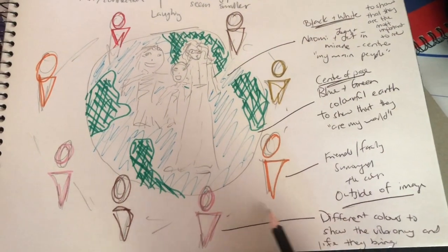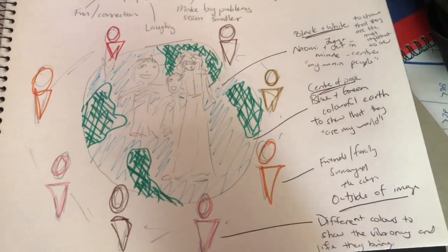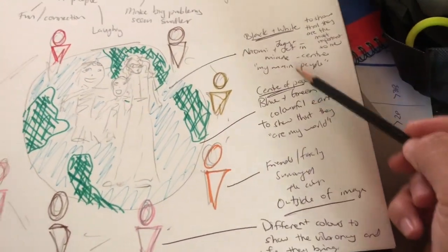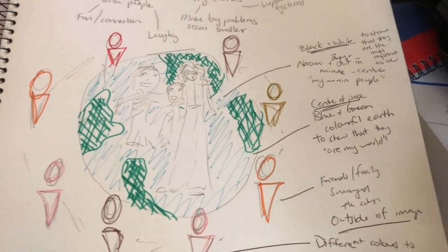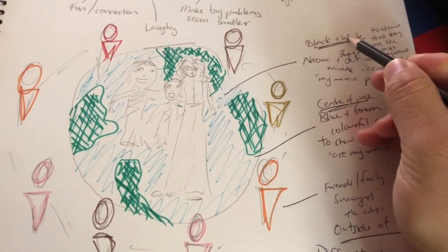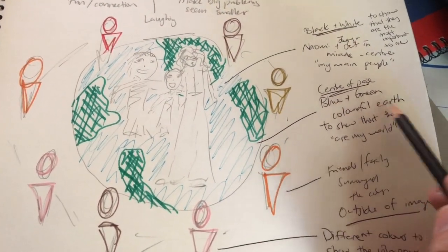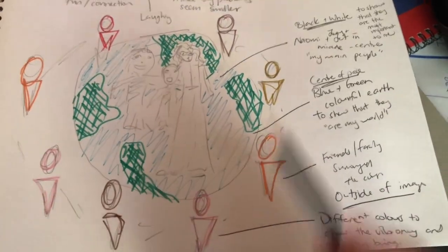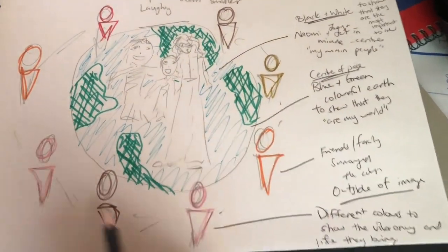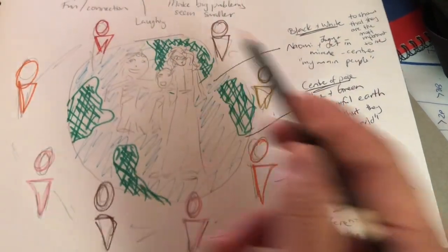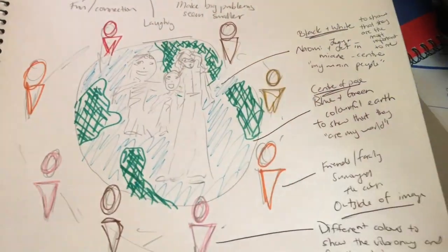Down here I've done a draft image — just a quick sketch, it's not perfect — of the static image I'm going to create. I've written lots of notes and labelled them to the different parts of my static image. This week we're talking about colour and composition. Over here I've talked about the colour: I've got black and white to show that they're the most important thing. In the middle I've talked about blue and green — a colourful earth — to show that they're my world. That's Naomi, Jethro, and Joey. And then around the outside, different people in different colour, to show the vibrancy in life that my extended friends and family bring to me.